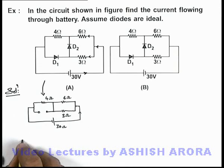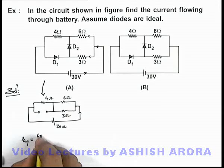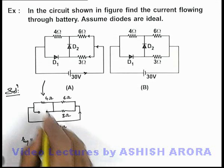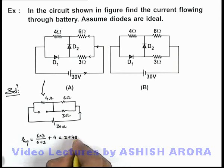So here we can write the equivalent resistance of the circuit will be 6 and 3 in parallel will be given as 6 multiplied by 3 by 6 plus 3, and as 4 is in series it will be plus 4. So this can be written as 18 by 9 it is 2 plus 4 in all, the equivalent resistance across the battery will be 6 ohm.